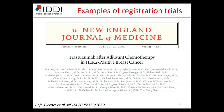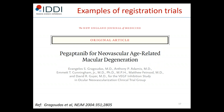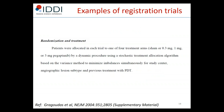Several well-known drugs have used minimization in their pivotal registration trials. Herceptin (trastuzumab) in breast cancer used minimization, as described in the statistical section published in the New England Journal of Medicine. Another example is pegaptanib (Macogen), a trial IDDI was responsible for, which was approved for the treatment of neovascular age-related macular degeneration. For that trial, the supplementary material describes the dynamic minimization procedure used, employing several factors to minimize imbalance between treatment arms.